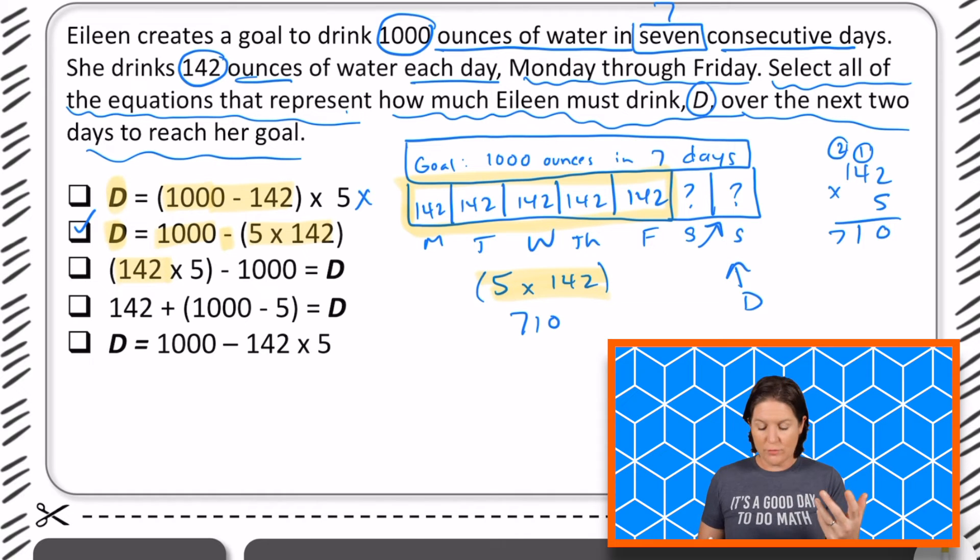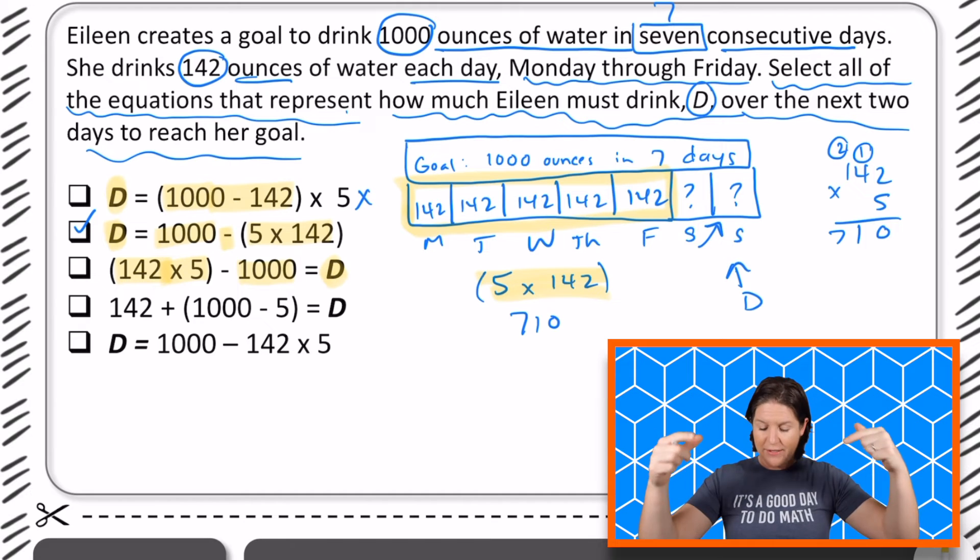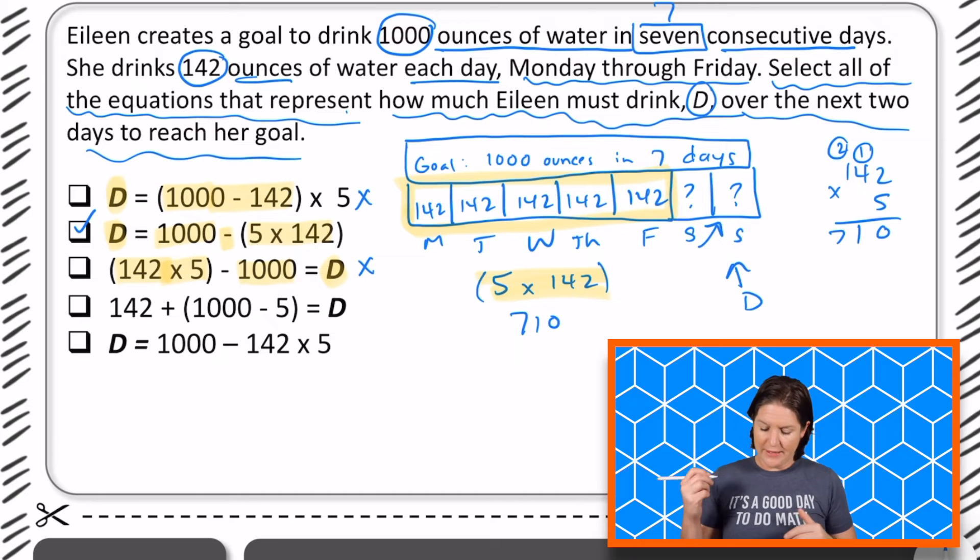142 ounces of water that she consumes for five days. That's looking good. And then should we subtract 1000 from 710 to figure out how much she still needs? No, those need to be flipped around, right? It should be 1000 minus the 142 times five. So this one, we can eliminate that one.